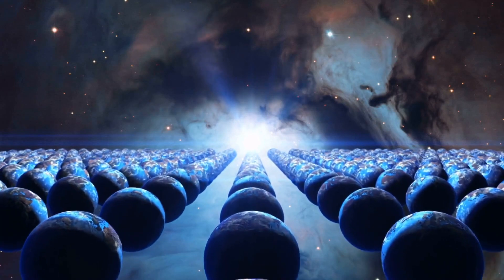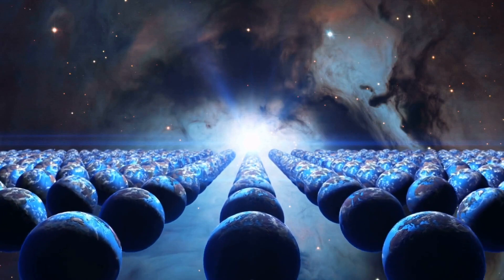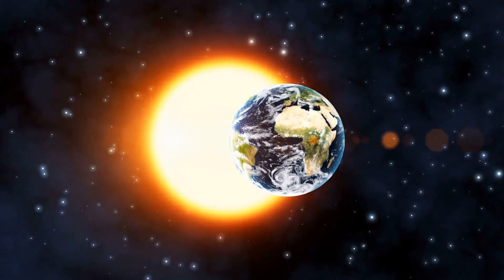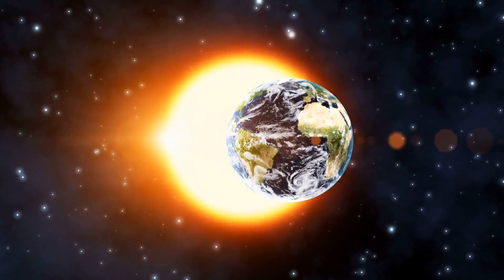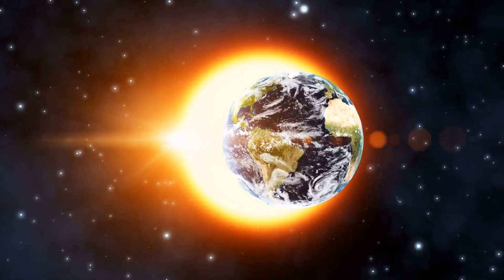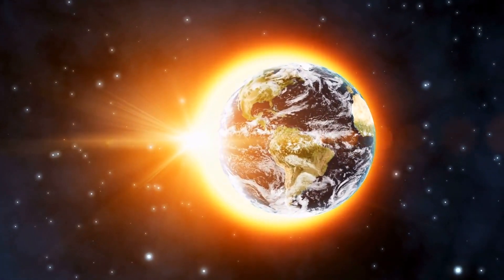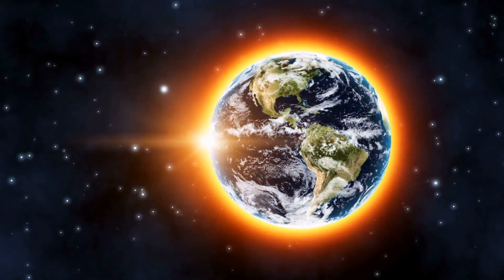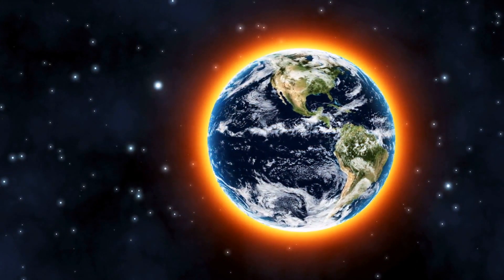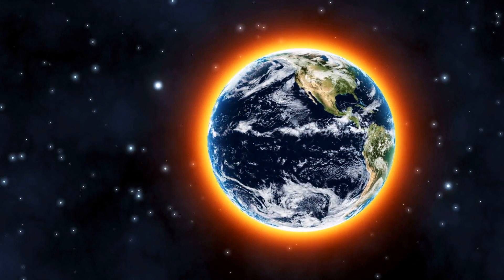One theory suggests that the universe is infinite, with no discernible edge. This theory is based on the cosmological principle, which posits that the universe is isotropic, meaning it looks roughly the same in every direction. If this holds true, the universe would continue infinitely, without a defined edge.